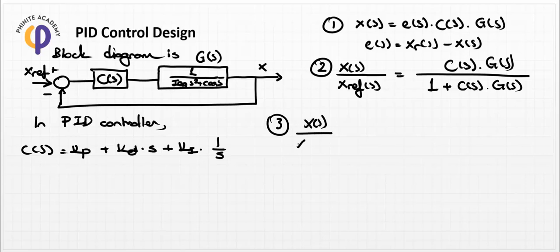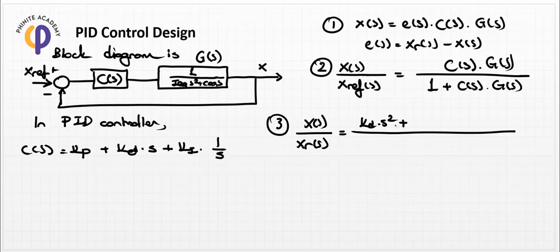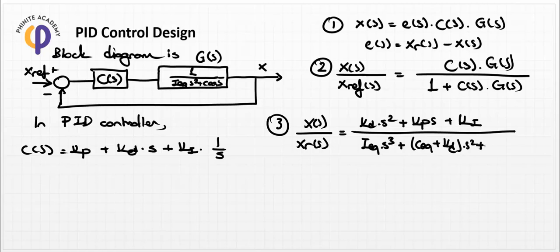In the third step, the equation of motion becomes X(s)/X_ref(s) equal to (K_d * s^2 + K_p * s + K_i) over (I_x * s^3 + (c_x + K_d) * s^2 + K_p * s + K_i). This is obtained by substituting G(s) = 1/(I_x * s^2 + c_x * s) and C(s) = K_p + K_d * s + K_i/s into the closed-loop formula.